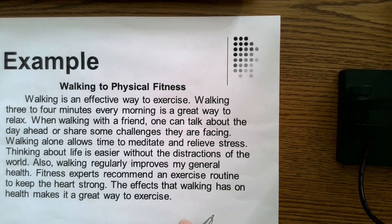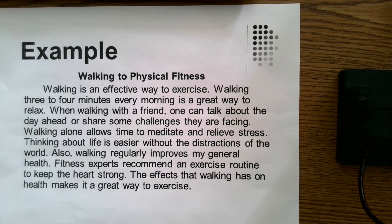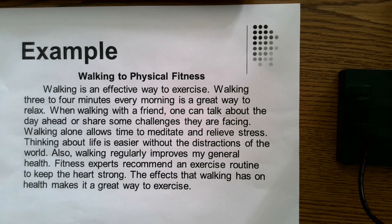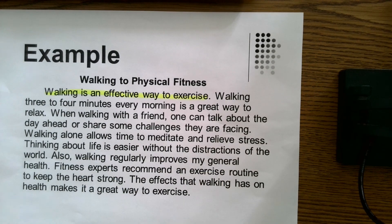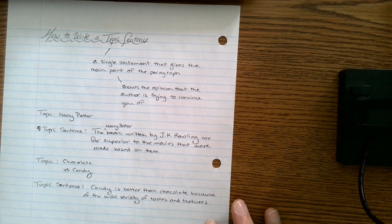Let's look at a second example. Walking is an effective way to exercise. Walking three to four minutes every morning is a great way to relax. When walking with a friend, one can talk about the day ahead or share some challenges they are facing. Walking alone allows time to meditate and relieve stress. Thinking about life is easier without the distractions of the world. Also, walking regularly improves general health. Fitness experts recommend an exercise routine to keep the heart strong. The effects that walking has on health makes it a great way to exercise. Again, the topic sentence is clearly the first sentence — walking is an effective way to exercise. The whole rest of the paragraph is about that, and it tells you the author's opinion on walking.